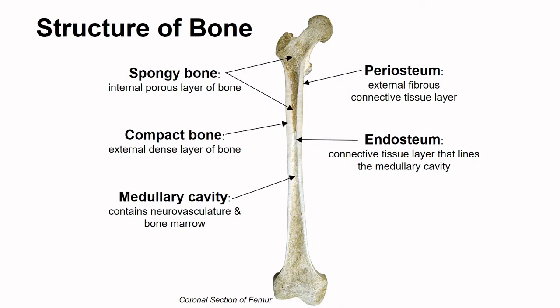Every bone has a layer of dense, compact bone that surrounds inner spongy bone. In long bones, we find that the spongy bone surrounds the hollow medullary cavity, as we saw before.